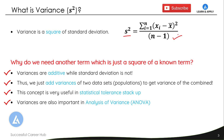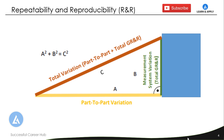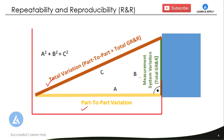Let me explain some practical applications of variance before we go into the calculation part. The first important application is measurement system analysis (MSA). In MSA, when we calculate total variation, we calculate the part-to-part variation and the measurement system variation. We calculate the variance for part-to-part variation as well as the variance for measurement system variation, and after adding these two variances, we get the variance for the total variation.